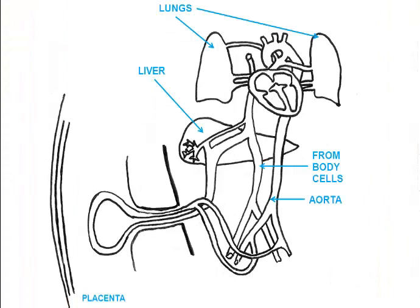In this view of the fetal circulatory system, we should see some familiar structures: the lungs, the liver, the vena cava returning blood from the body cells, the aorta delivering blood to body cells. There are also some modifications.